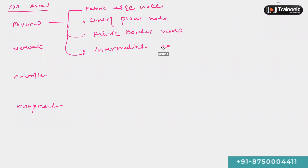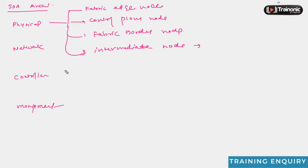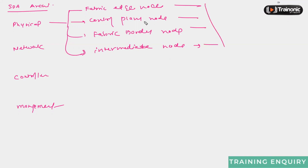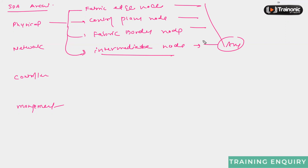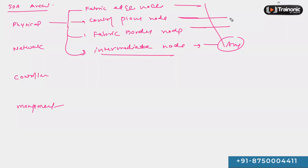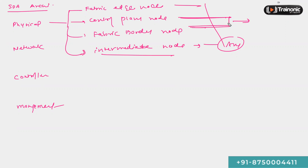Intermediate nodes are not even aware of the SDA deployment. We have different models that can act as the fabric edge node, control plane node, border node, or intermediate node — it can be any device. Fabric edge node, fabric control plane node, and fabric border node are different devices, but we can combine the functionalities of the fabric control plane node and the border node into one device. However, it is not a very recommended solution, but we can do that.